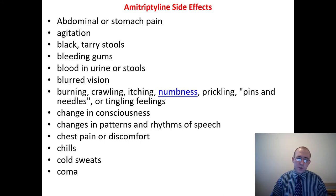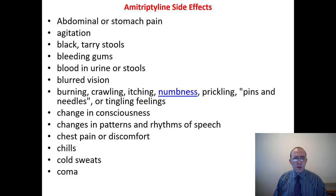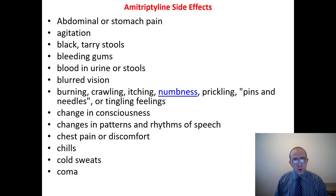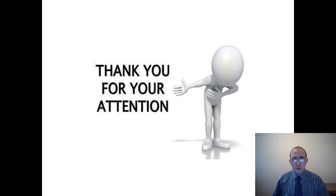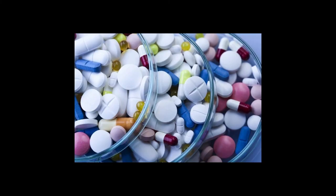Amitriptyline side effects include: abdominal and stomach pain, agitation, black tarry stools, bleeding gums, blood in urine or stools, blurred vision, chest pain or discomfort, cold sweats, and coma. Thank you for your attention, students. I hope you will get only marks of 5. Good luck!